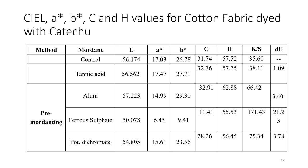Looking at the CIE Lab values for cotton dyed with catechu: the control sample shows an L value of 56.174, but when mordanted it becomes 54.80 — the lower the L value, the darker the sample. The K/S value of the control is 35.60; when pre-mordanted with potassium dichromate it becomes 75.34; and the ferrous-mordanted catechu-dyed sample shows a K/S value of 171.43, as ferrous always causes darkening. These CIE Lab values are universally accepted and the L, a, b values decide the shade and tone of the dyed fabric.